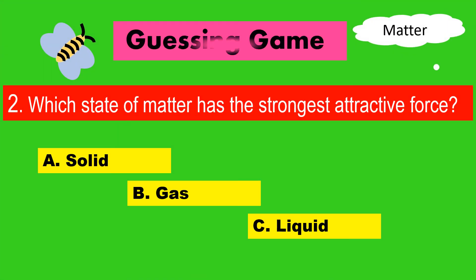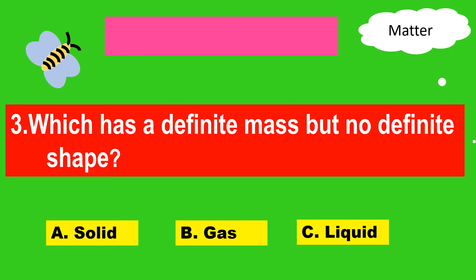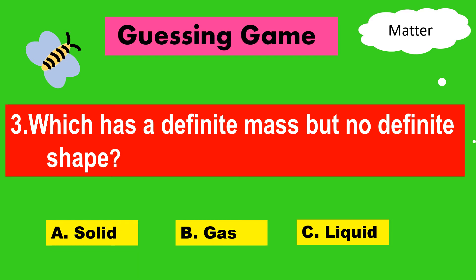Question number two: Which state of matter has the strongest attractive force? A, solid; B, gas; C, liquid. Question number three: Which has a definite mass but no definite shape? A, solid; B, gas; C, liquid?